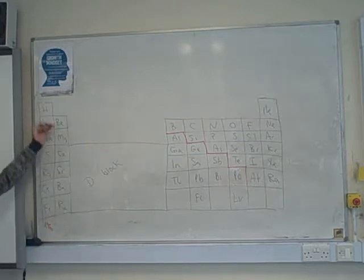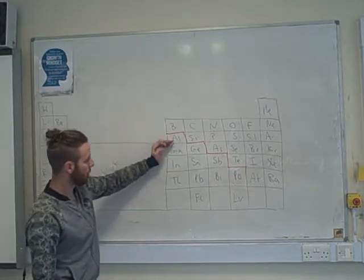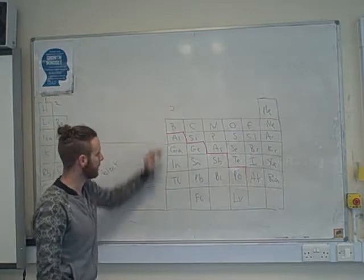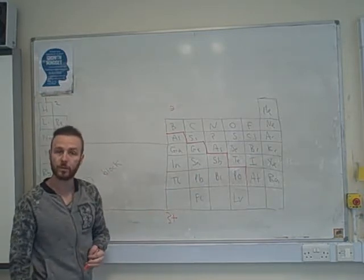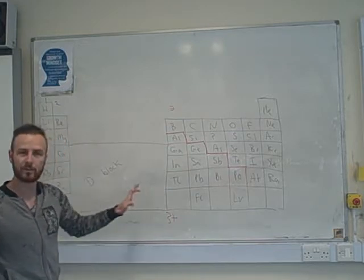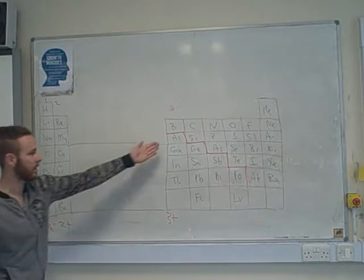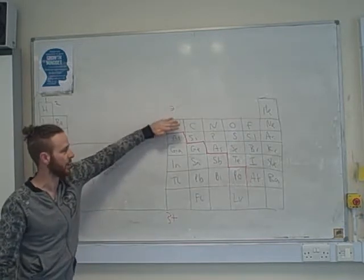Your group two metals here, these will have a charge of two. Your group three metals here, so one, two, three, these are going to have a charge of three or three plus. And we'll kind of stop there. So group one is one plus, group two is two plus, group three is three plus. Remember, boron is a non-metal, so it doesn't include boron.